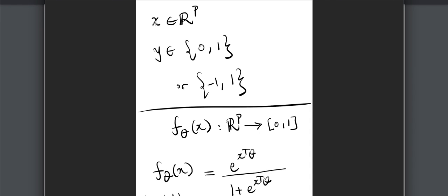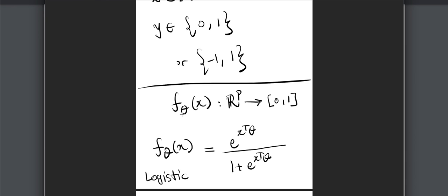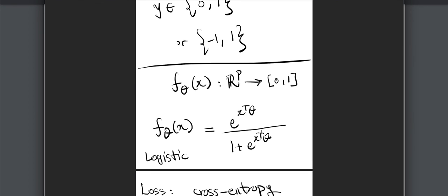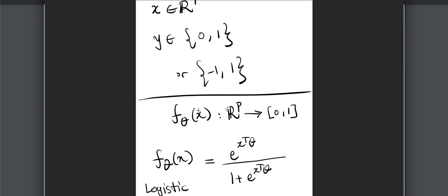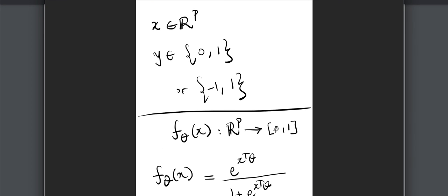Each data point involves a feature vector and a response of 0 or 1. The feature vector is P-dimensional, the response is either 0 or 1. The goal is to learn this function f_theta, where theta is a parameter — essentially beta in logistic regression — and f_theta gives us a number between 0 and 1 representing the probability that the response is 1.